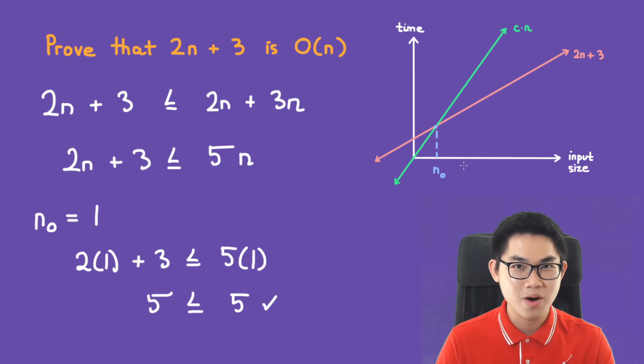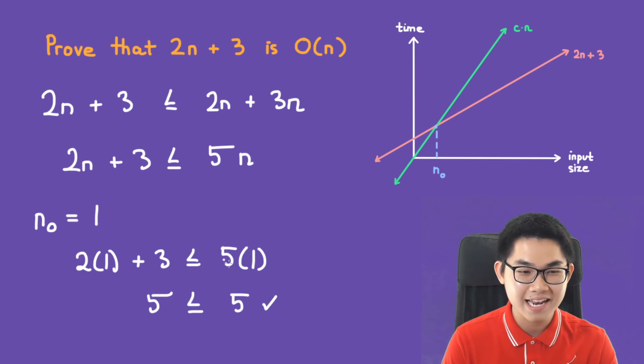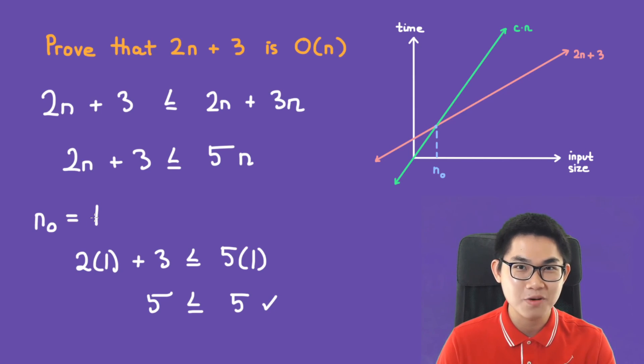If you plug in 1 and this inequality is not true, you can just increase n naught to 2 and try it again until you find one that works.